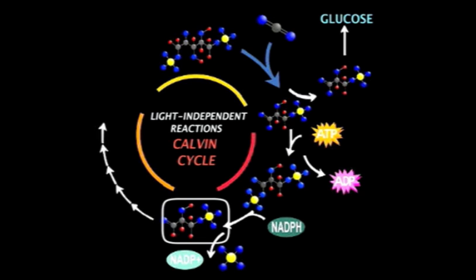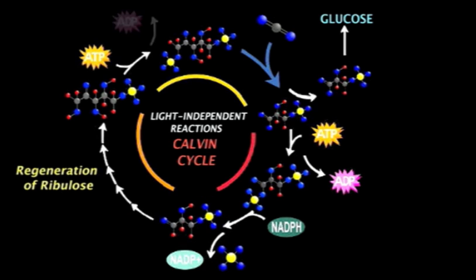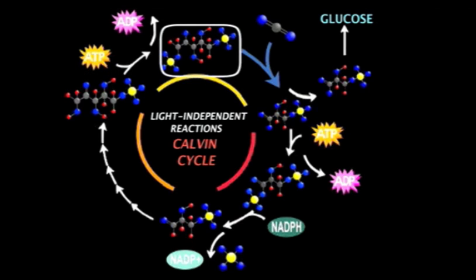After that, a complex series of steps known as the regeneration of ribulose takes place that consumes another molecule of ATP. These steps result in the formation of a new ribulose biphosphate molecule. And with that, the Calvin cycle is complete.